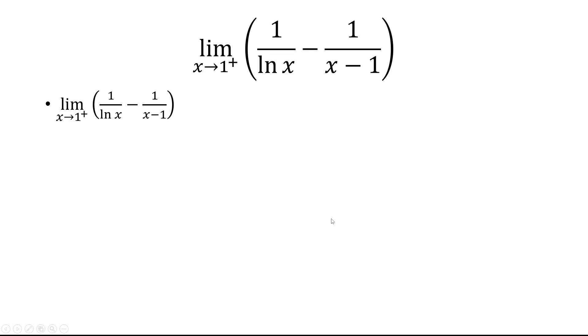The first thing is, let's combine this under one fraction. So we have a common denominator of ln of x times x minus 1. The numerator is x minus 1 minus ln of x.